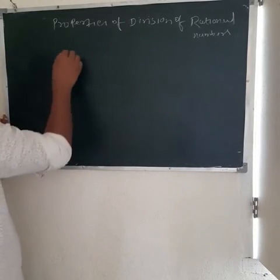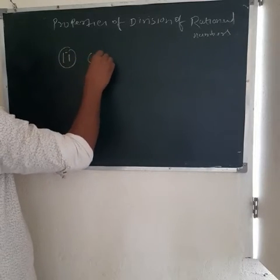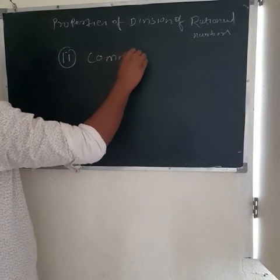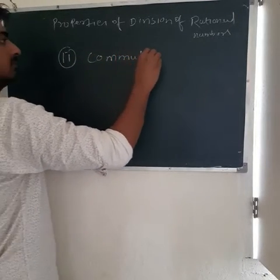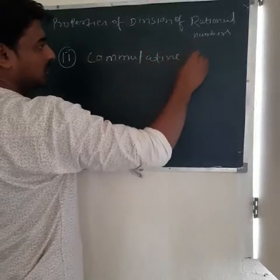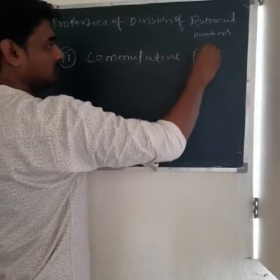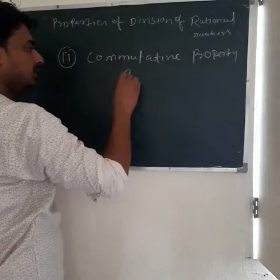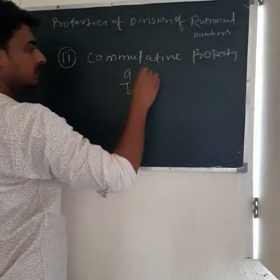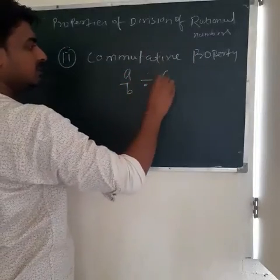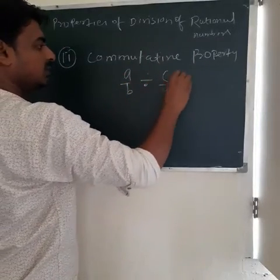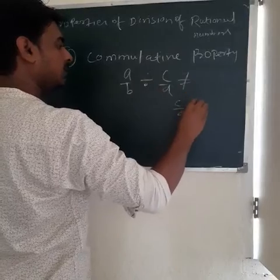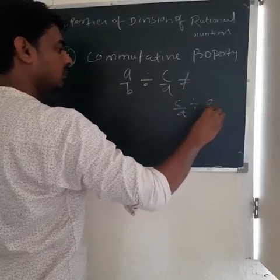Next one is the commutative property. In case of division, the commutative property states: A upon B divided by C upon D is not equal to C upon D divided by A upon B.